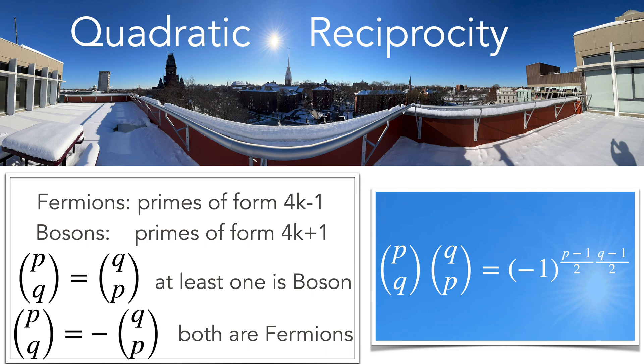The Legendre symbol p over q is defined to be 1 if p is a square modulo q. Let's just call a prime fermion if it is of the form 4k-1, otherwise we call it a boson. The theorem tells what happens if we switch the two primes in this Legendre symbol. The sign changes only if both of the primes are fermions.